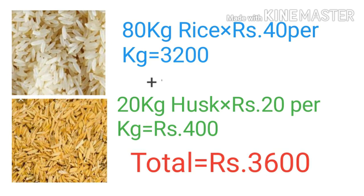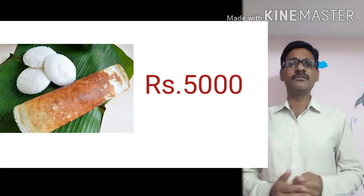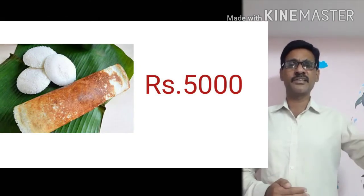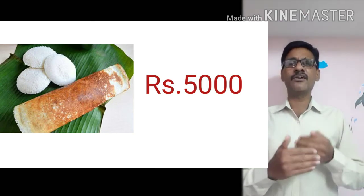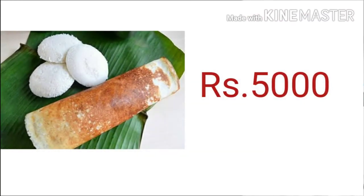The rice miller sold the rice at 40 rupees per kg and the husk at 20 rupees per kg, finally getting 3,600 rupees. A hotelier then purchased the rice from the rice miller by paying 3,600 rupees, used the rice, and made idlis, dosas, and other items in his hotel.